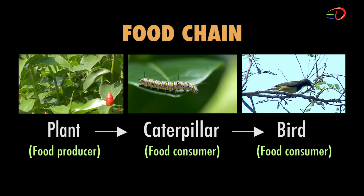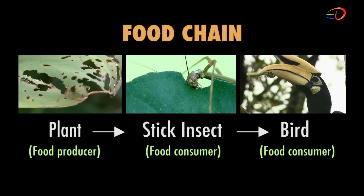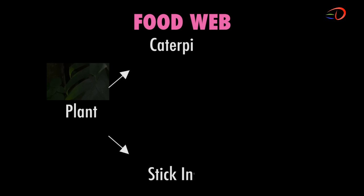Besides eating caterpillars, the bird also feeds on stick insects. This forms another food chain. When the food chains are linked together, a food web is formed. The organisms in an environment are dependent on one another.